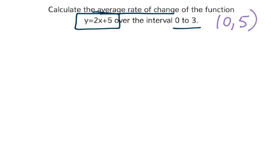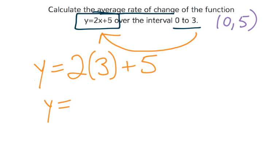Now I'm going to plug in the other x value, 3, into that same equation. y equals 2 times 3 in place of x plus 5. y equals 2 times 3 is 6, plus 5. y equals 11. So the other point is 3, 11.